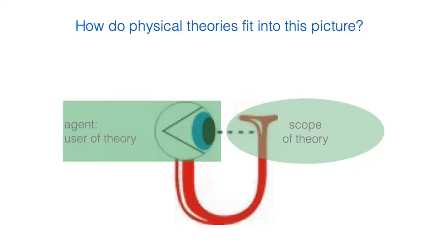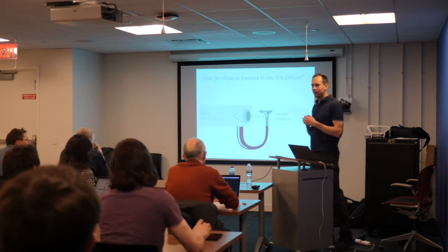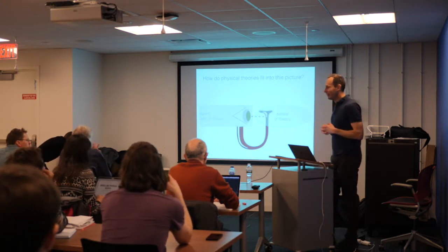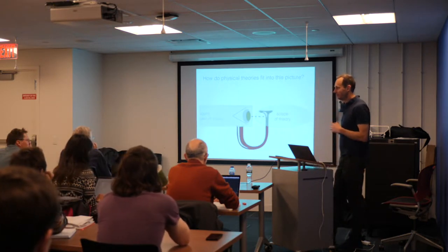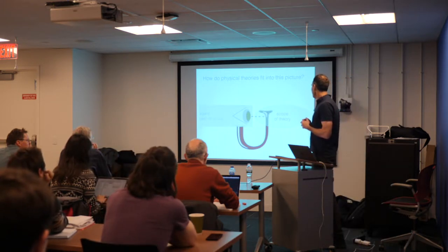I guess you know what this picture means. In this talk, I often want to talk about physical theories. The question is how do physical theories fit into this picture. One way to see that is to say we have users of a physical theory — we are all users — which doesn't mean we are not also part of the physical theory. An agent is essentially a user of the theory, and on the other hand we have the scope of the theory: the theory tries to describe something.